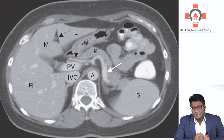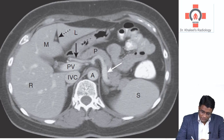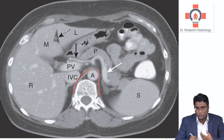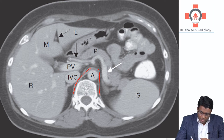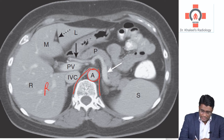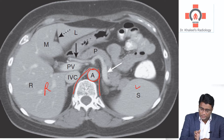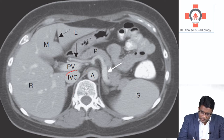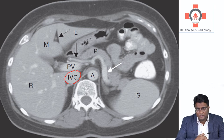Look at this image again. You can see between the right and left crura of the diaphragm — between the crura of the diaphragm — you have the aorta. To the right of the aorta is the right side, and to the left is the left side. So towards the right of the aorta we have the inferior vena cava.